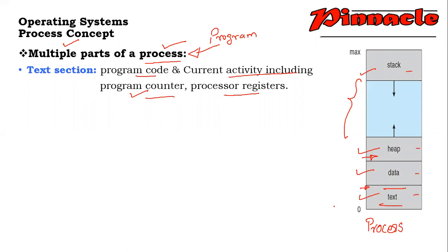For example, if I have 100 instructions in the program — instructions 0 to 99 — after the first instruction, after the second instruction, we have to reach the 99th instruction to complete the program. This is the program counter, which takes us from one instruction to another. While executing the instructions, we need CPU registers or processor registers to store values, variables, etc. Which registers are used and all that information will be saved in this part.